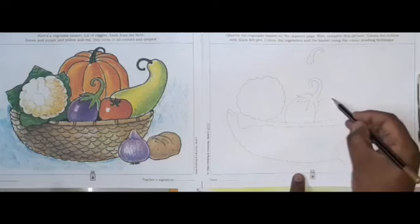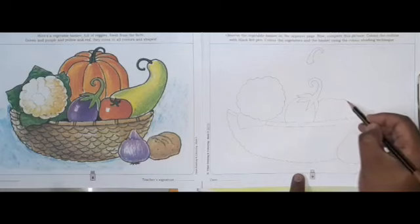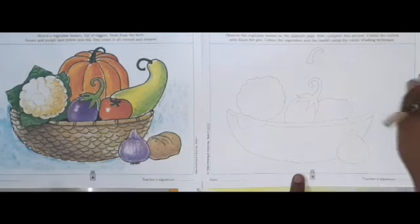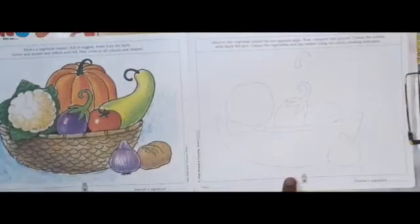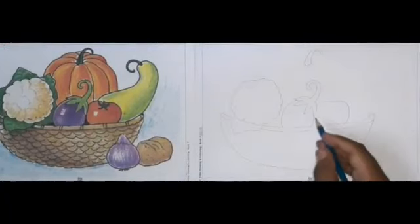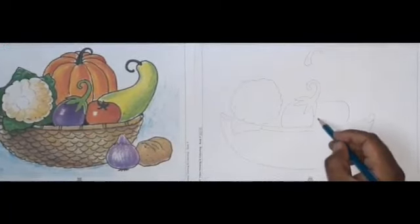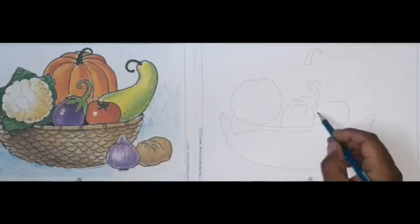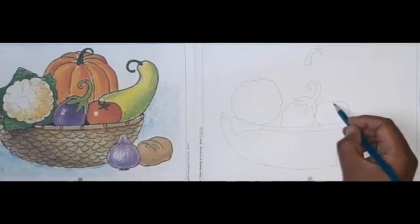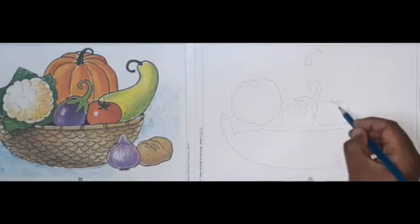First we draw oval shape like this, then we draw other shape, little oval here. Now we draw leaf like star.